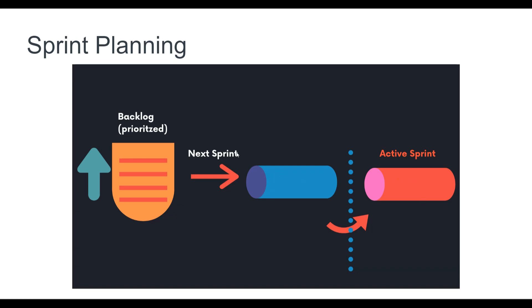Once the active sprint is completed, the next sprint — which has been prepared and clarified by the scrum team — becomes the active sprint. The blue becomes red, the red is already finished, and then another blue comes in as you start preparing the future sprint. This rinse-and-repeat cycle continues until all sprint backlog items have been worked on and completed.